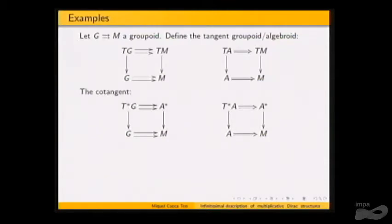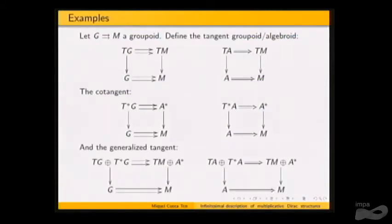As dual of the tangent, we have the cotangent. Given a VB groupoid, we have a core, and if we take the dual of the vector bundle we obtain a new groupoid over the dual of the core — this is the cotangent. When we have two VB groupoids over the same base, we can take their sum, and in that case we obtain the generalized tangent VB groupoid.